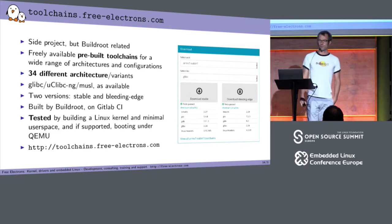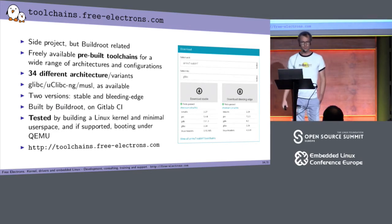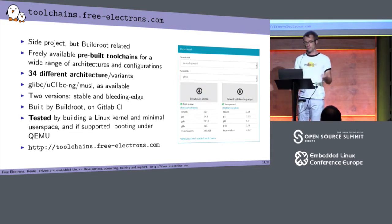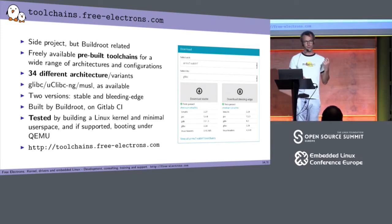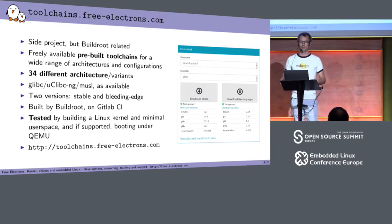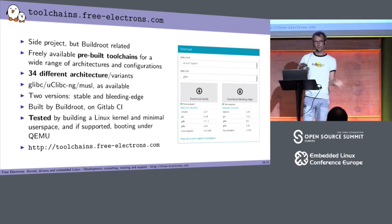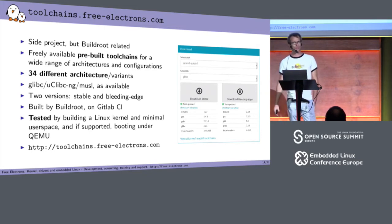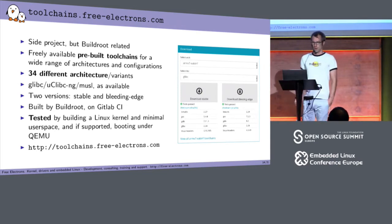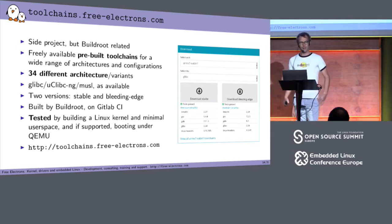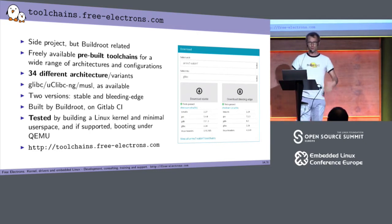A related side project is toolchains.freeelectrons.com — a website where you can select your architecture and C library (glibc, uClibc, or musl) and download a pre-compiled toolchain. We have 34 different architecture variants supported, multiplied by roughly three C libraries and two versions (stable and bleeding edge), making about 130 toolchains available total. You click and you have a pre-built toolchain for that platform. Almost all of those toolchains are tested by building a Linux kernel and booting it in QEMU, done automatically on GitLab CI. It's a new source of freely available pre-built toolchains to save build time.